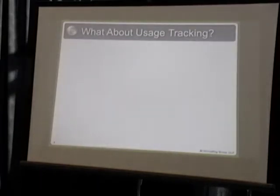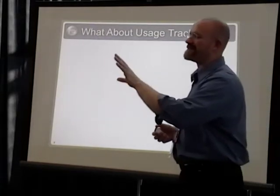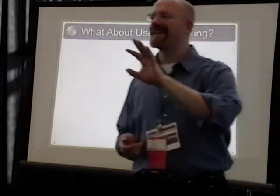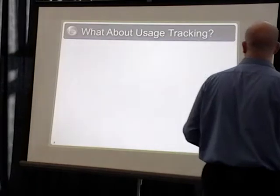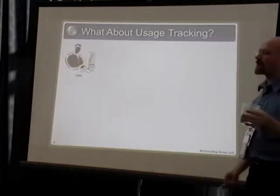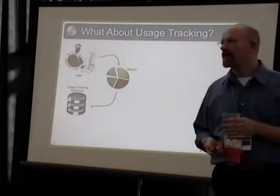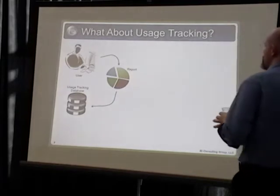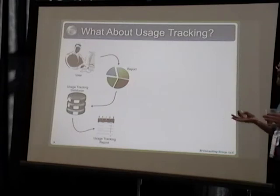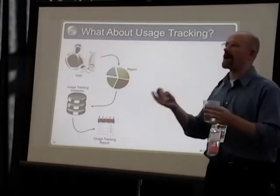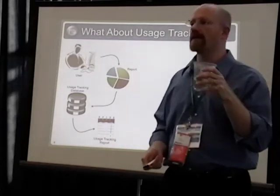So, what about usage tracking? Someone in the back of the room mentioned usage tracking. In OBIE, there is a feature called usage tracking. The way it works is that an end user runs a report, and the record of that report being run gets written into a usage tracking database table. Then you can run a usage tracking report and see all that information — who, what, when, how often, how long it took, and all those good things for usage tracking. And that's great.